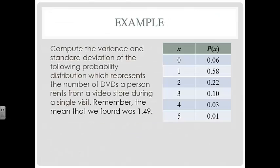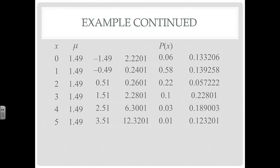Let's take a look at this example. Compute the variance and the standard deviation of the following probability distribution, which represents the number of DVDs a person rents from a video store during a single visit. It's the same table that we've been using. Remember that the mean that we found was 1.49. Here's our table. We've got our column of X's. We've got our column of mu. Then we have our column of X minus mu.